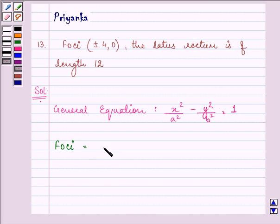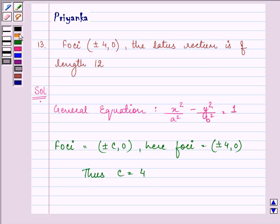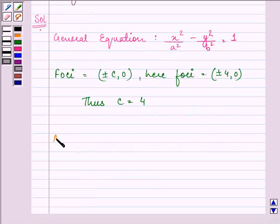We know that foci is equal to (±c, 0) and here foci is given to us as (±4, 0), thus we have the value of c as 4. Also we know that the length of latus rectum is equal to 2b²/a.